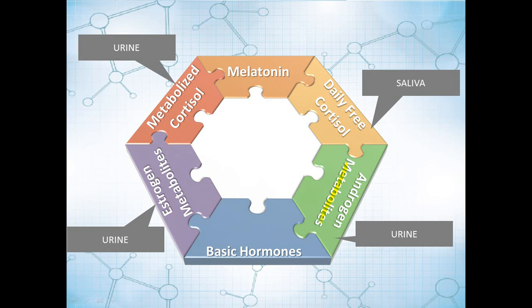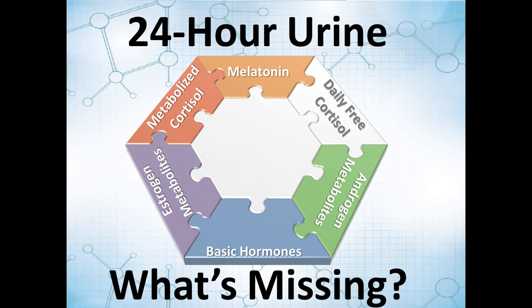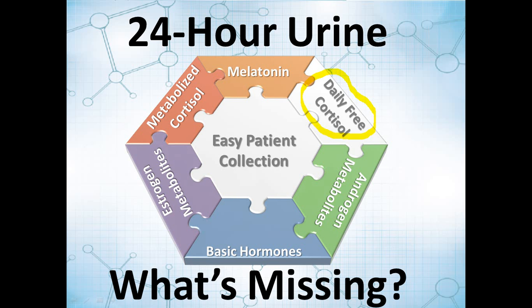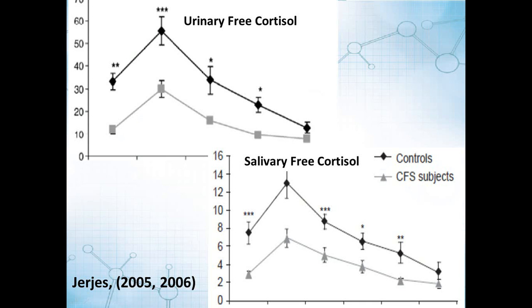If you look at a 24-hour urine test, what you're mostly missing is the daily free cortisol pattern — a really important piece of information. The other limitation of traditional 24-hour urine is patient compliance, since patients are often reluctant to complete it. Overall, urine is the closest to a complete picture. Looking at a study from 2005 and 2006 comparing controls and chronic fatigue patients, in saliva you get the expected pattern: cortisol increases upon waking then drops throughout the day.